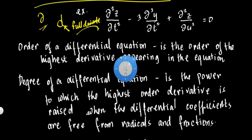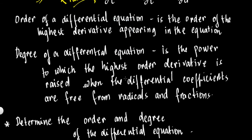Next is the order of the differential equation. The order of a differential equation is the order of the highest derivative appearing in the equation. To find it, just look for the highest differential coefficient or highest derivative in the equation. If the highest is a second derivative, that's second order. If it's a third derivative, that's third order. Just find the highest derivative and it will tell you the order.